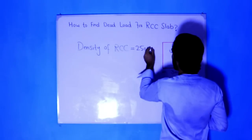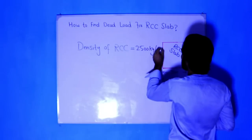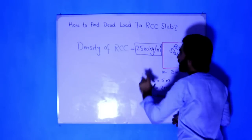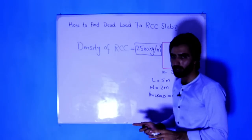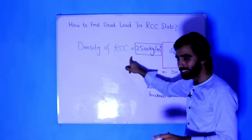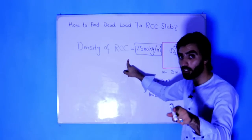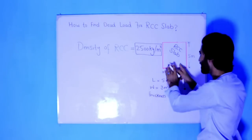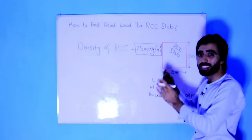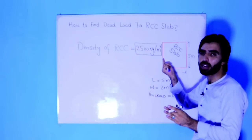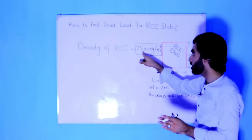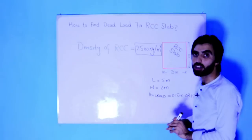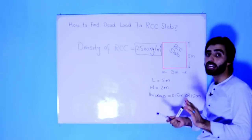This is density of RCC slab. Just two steps: remember the density of RCC slab. This is RCC slab, so it means RCC materials are present here. Density of RCC is 2500 kg per cubic meter.